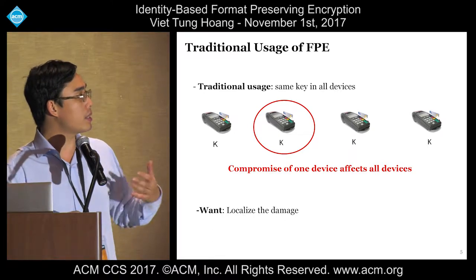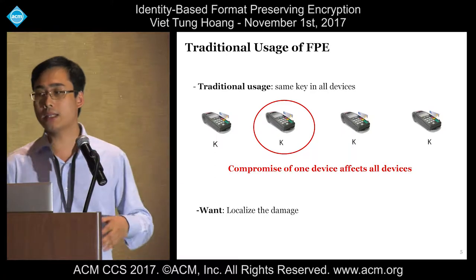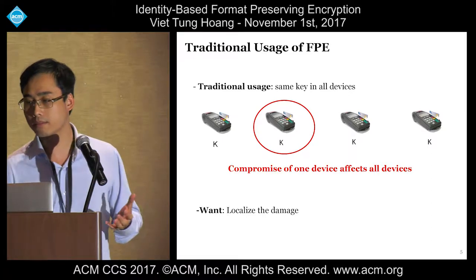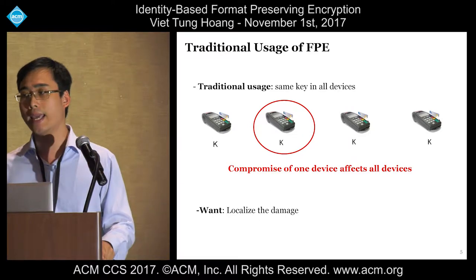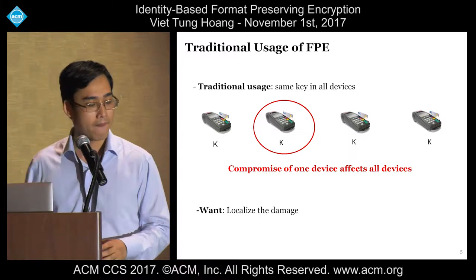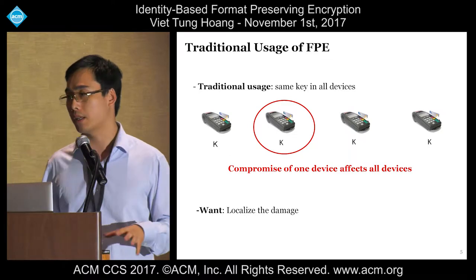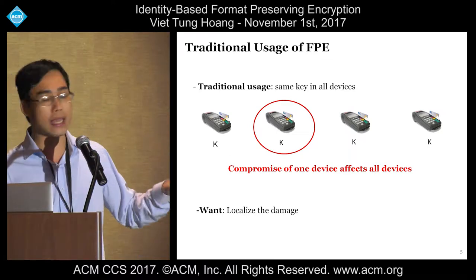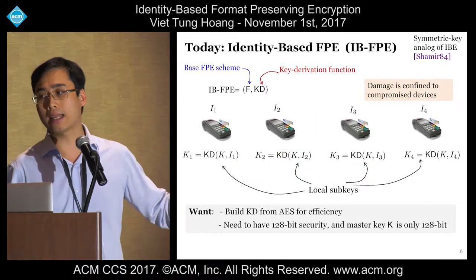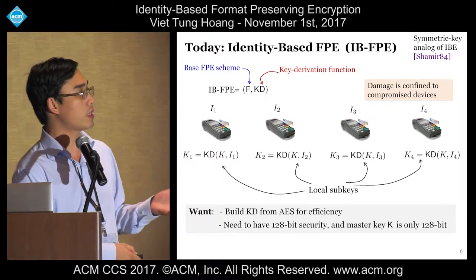An IBFPE scheme consists of a base FPE scheme F and a key derivation function KD. Each device has a different sub-key derived from a common master key K and the identity of that device. Thanks to the use of different sub-keys across different devices, the damage is confined to compromised devices. Since the base FPE scheme F is built from AES, we'd like to build the key derivation function from AES as well, and the IBFPE scheme should have 128-bit security.